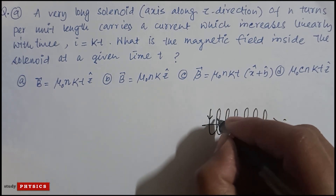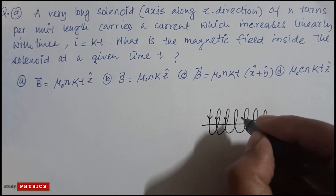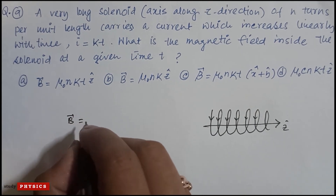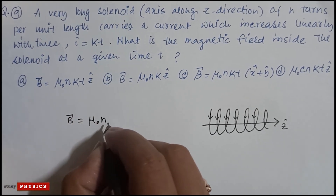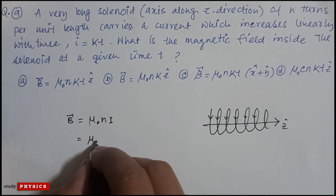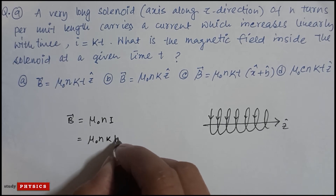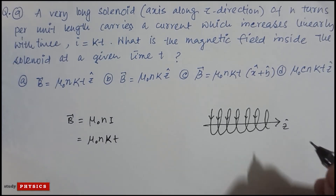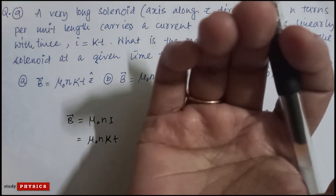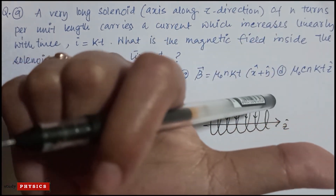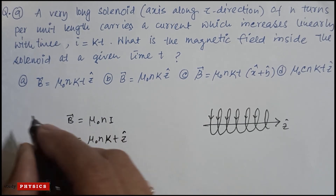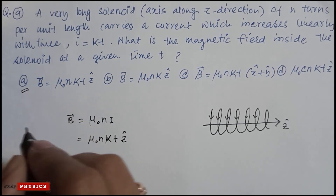Current flows in the solenoid. We know that B = μ₀NI, and since I = kt, we get B = μ₀Nkt. For direction, using the right-hand thumb rule with the current flowing as described, the magnetic field is in the z-direction. The correct option is A.